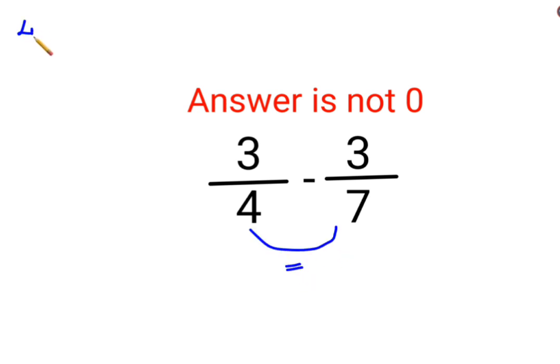So in order to make the denominator same we will take LCM of 4 and 7. Now since 7 is a prime number the LCM comes out to be 4 multiplied by 7 that becomes 28.